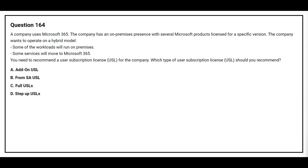Question number 164. A company uses Microsoft 365. The company has an on-premises presence with several Microsoft products licensed for a specific version. The company wants to operate on a hybrid model — some workloads will run on-premises and some services will move to Microsoft 365. You need to recommend a user subscription license (USL) for the company. Which type of USL should you recommend?